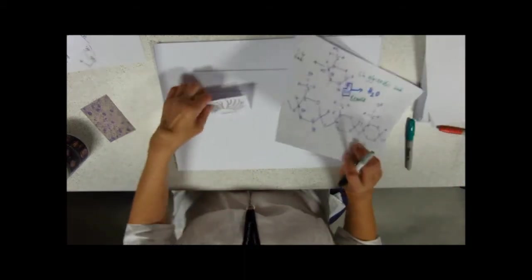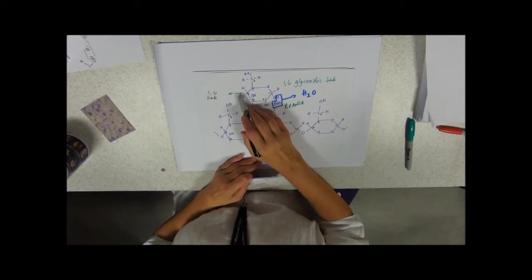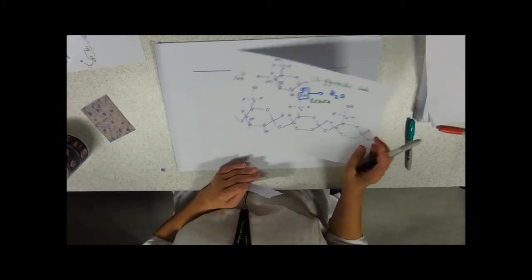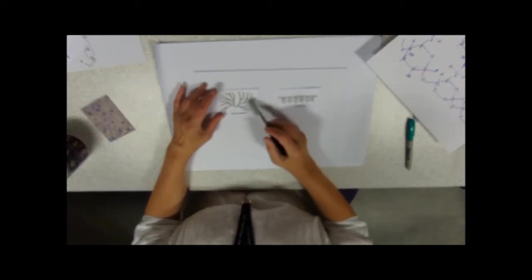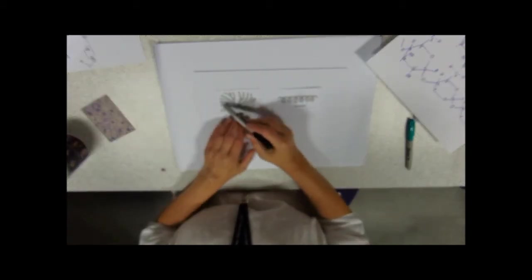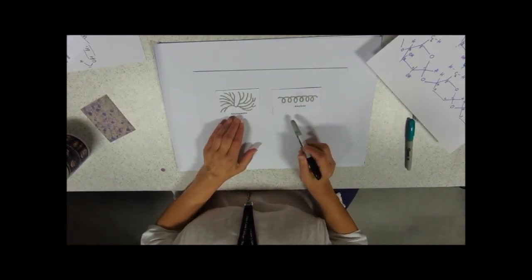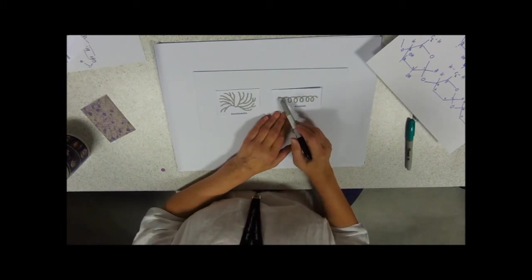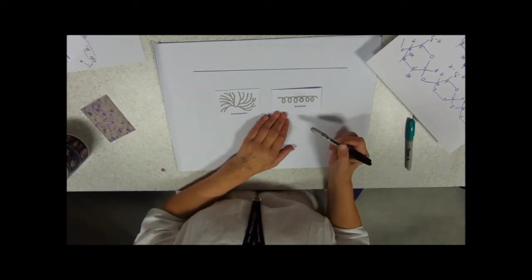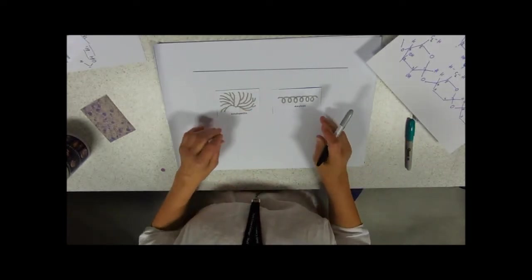Just going back to this diagram, if we've got a carbon number 4 free, we could add more glucose units to that. So the advantage of having branches is that we've got far more ends to take glucose off, so it will release energy a bit more rapidly. Amylose, we tend to break down into these dimer units of maltose first, and then use another enzyme to break it down.